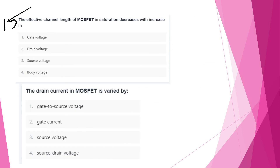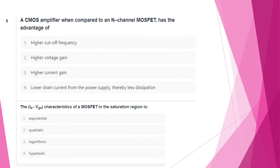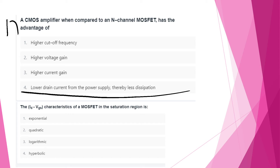The ft (transition frequency) with channel length of a MOSFET in saturation decreases with increase in channel length. The drain current of a MOSFET is varied by varying Vgs (gate-to-source voltage). CMOS amplifier, when compared to an N-channel MOSFET, has the advantage of lower drain current from the power supply, thereby less power dissipation. The Id-Vgs characteristic of a MOSFET in the saturation region is quadratic.